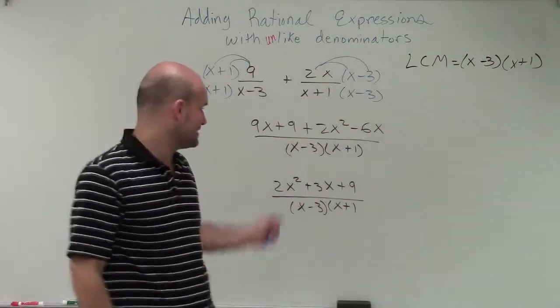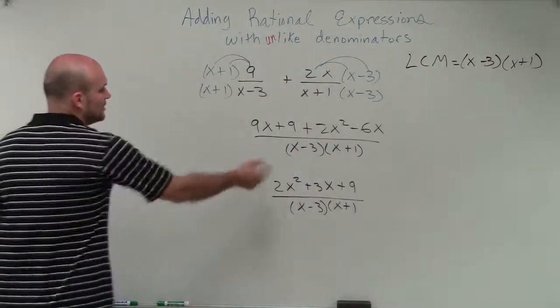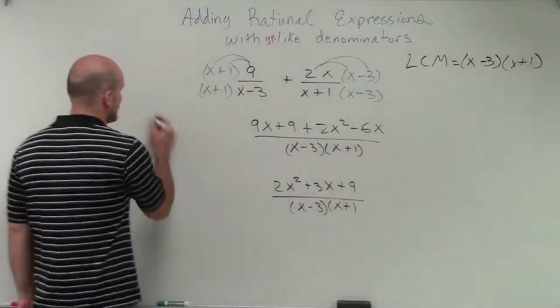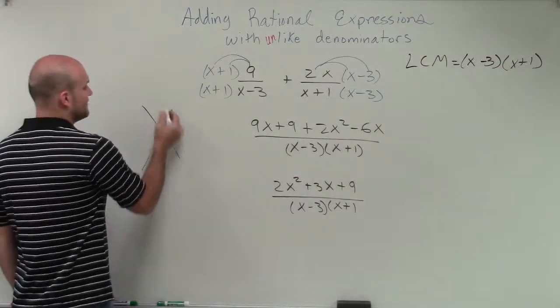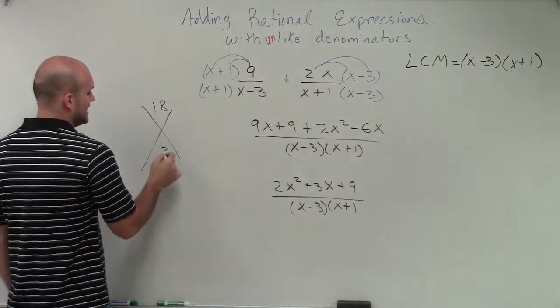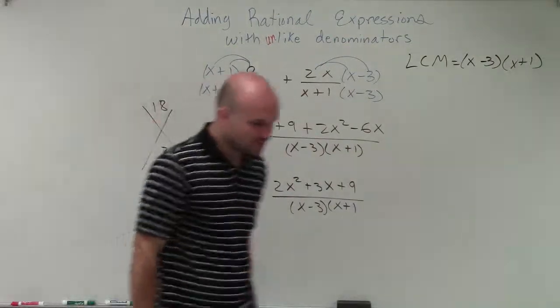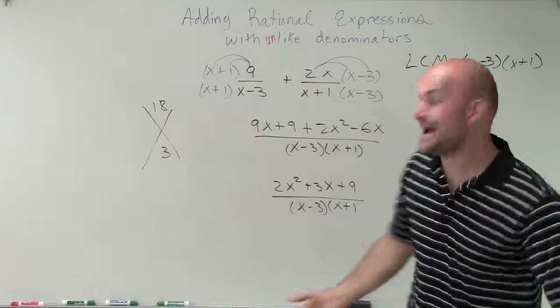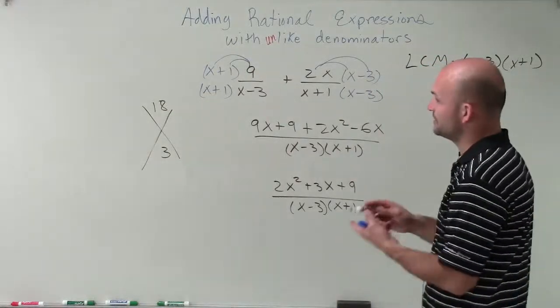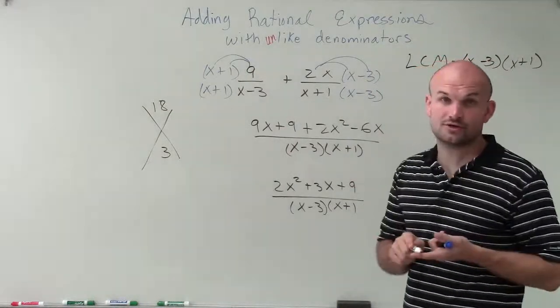Now, one thing you always want to do is look at this and say, all right, well, can I factor the 2x squared plus 3x plus 9? So I can just go back to a little factoring technique and say, all right, that's going to be 18 and 3. What two numbers multiply to give me 18 but then add to give me 3? And we look at this, we could say, well, we have 18 and 1. No. We have 9 and 2. No.